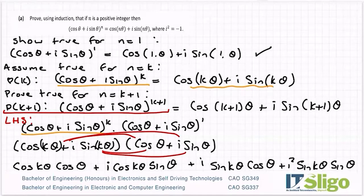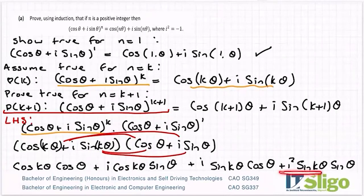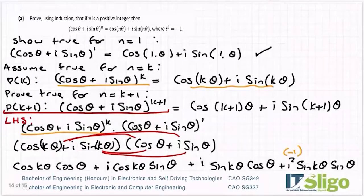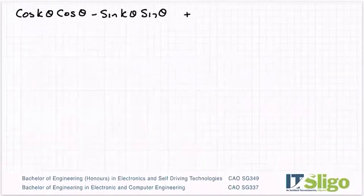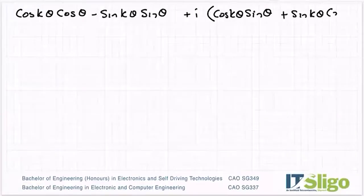I'm going to substitute in for my i². Then I'm going to group my reals with my reals and my imaginaries with my imaginaries. So cos(kθ)cos θ, I'm going to sub in -1 for i² because it is complex numbers. So I get -sin(kθ)sin θ. Then I'm going to factor out the i's, or bring the imaginaries together: i(cos(kθ)sin θ + sin(kθ)cos θ).